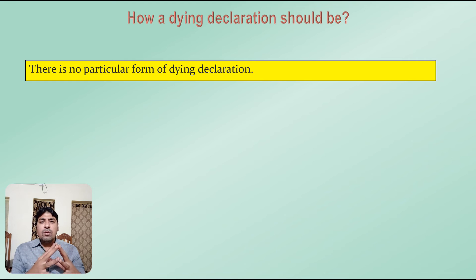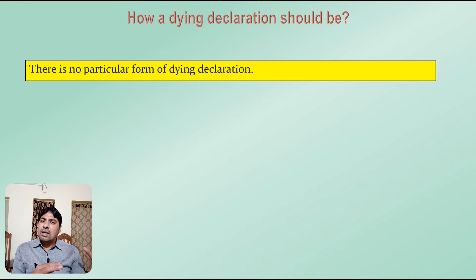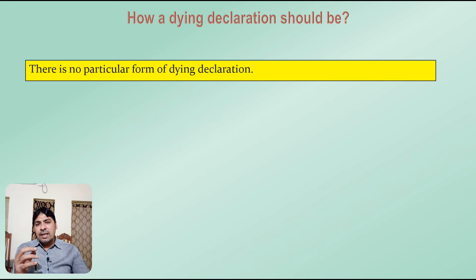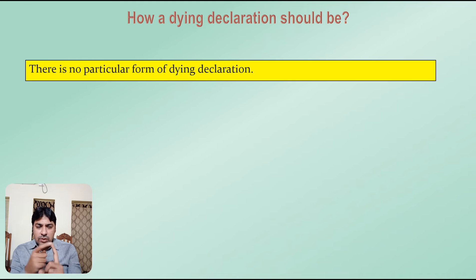For example, in one case a person told his wife that he was going to a particular village to collect money from someone. He went there, and after two days when he did not return, a search was conducted and his dead body was found in a railway compartment. The circumstances he described to his wife — going to collect money — and his death occurring in those same circumstances was treated by the court as a dying declaration, even though he did not explicitly name who killed him.